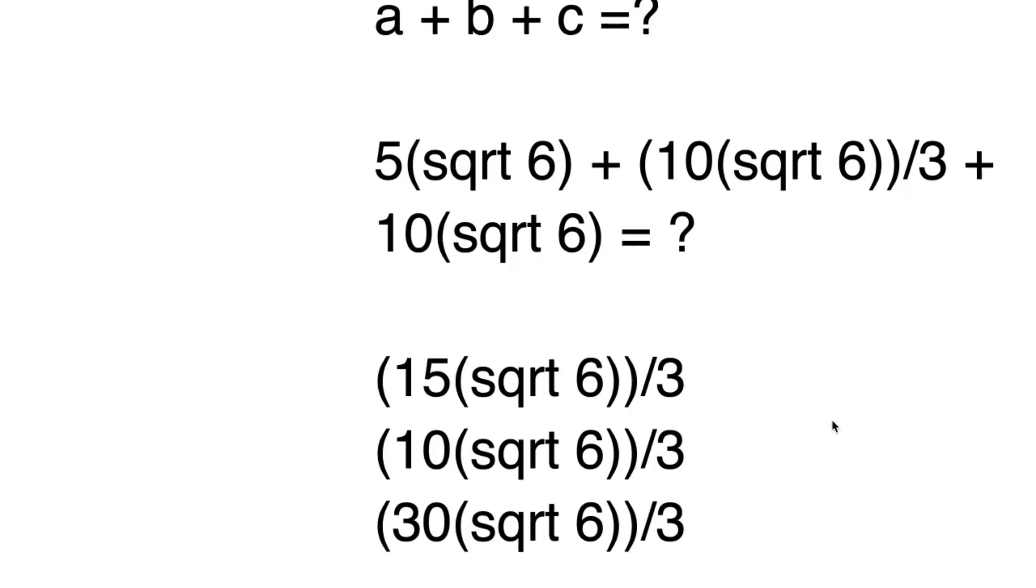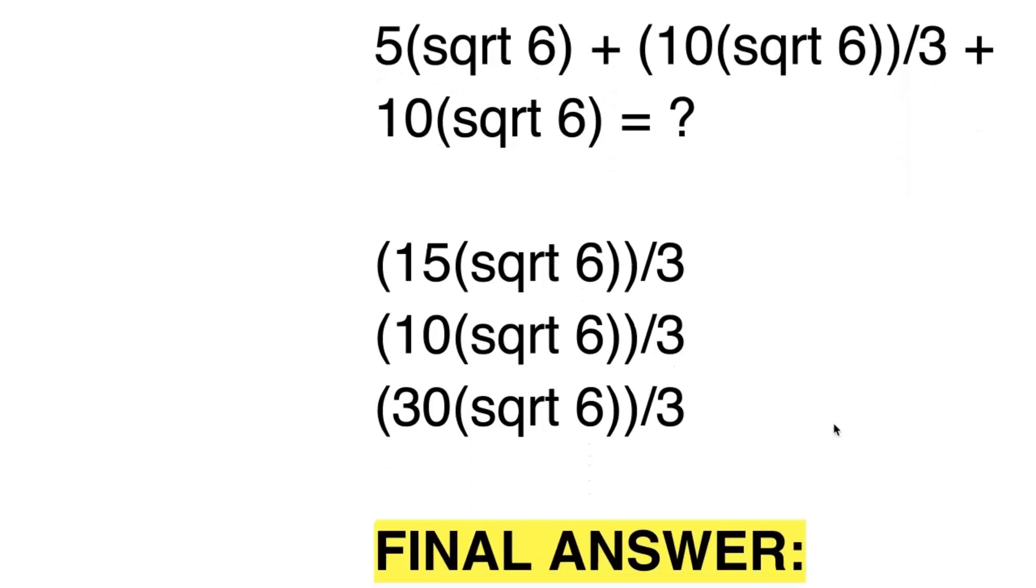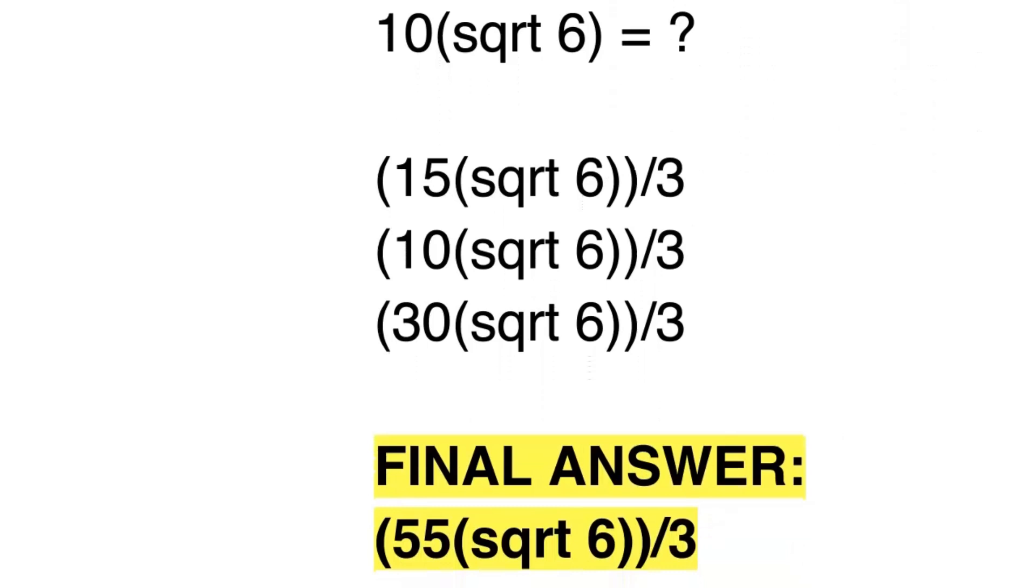Okay, so now we have all these values. If we just add the coefficients, so 15 plus 10 plus 30, then we get 55. So our final answer now will just be 55 times square root 6 all over 3.